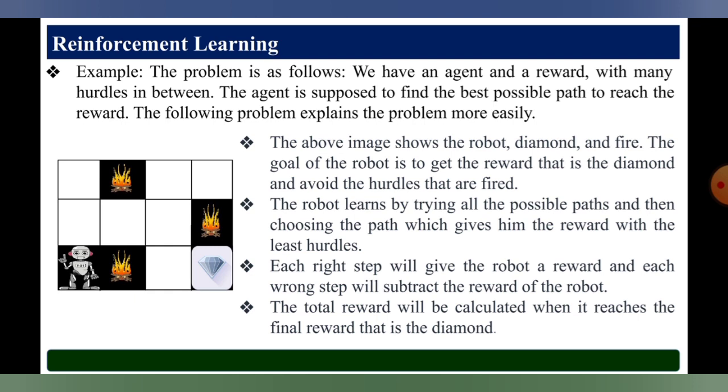There is a grid of boxes — some boxes have fires, some are empty. On the left bottom side there is a robot, and on the right bottom side is the reward, which is a diamond. The robot learns by trying all possible paths and choosing the path that gives the reward with the least hurdles. Each right step gives the robot a reward.